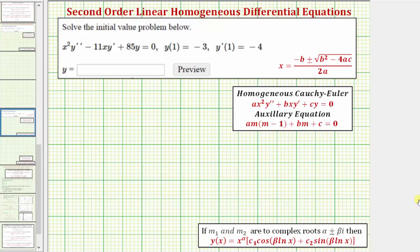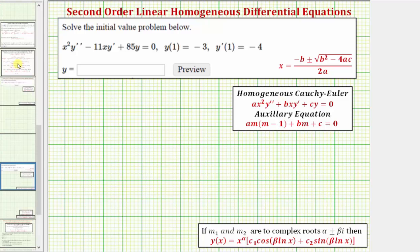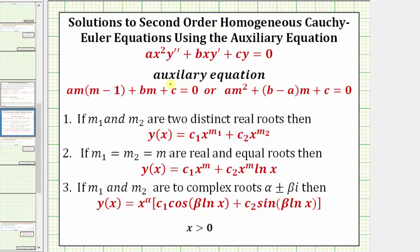Welcome to an example of how to solve an initial value problem involving a Cauchy-Euler differential equation. A Cauchy-Euler differential equation fits this form here. For each term, the degree of the coefficient, which is a function of x, equals the order of the derivative. We can solve a second order Cauchy-Euler differential equation using an auxiliary equation, and the solutions of the auxiliary equation give us the information we need to find the general solution.